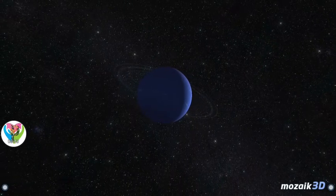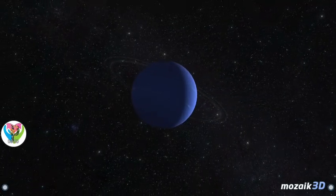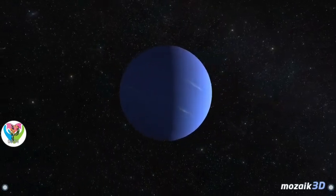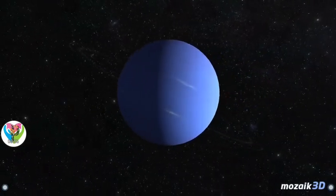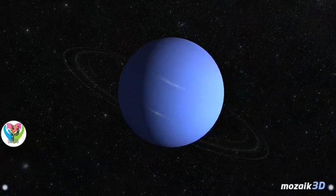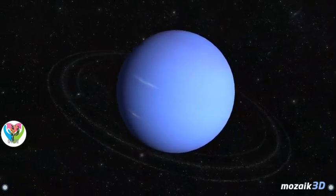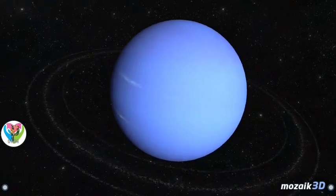Neptune is one of the outer planets, the outermost in the solar system. It is 30 times farther from the Sun than the Earth is, on a near-circular orbit. It is the smallest of the gas giants, a Jovian planet, very similar to Uranus.